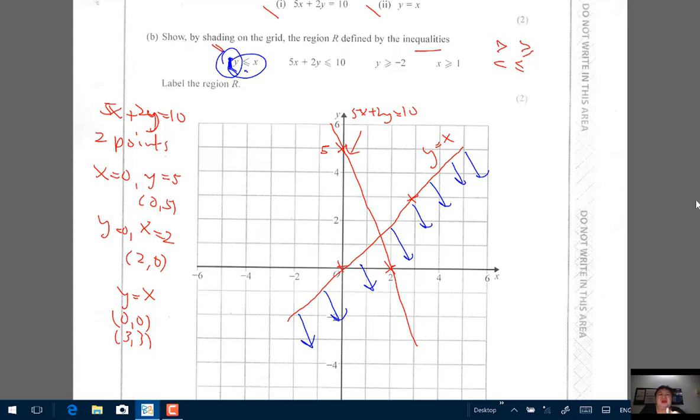Similarly, if it is y greater or equal to x, for the same line, it will be above, above the red line y equals x. So that's my tip quickly.